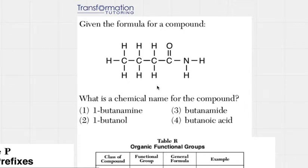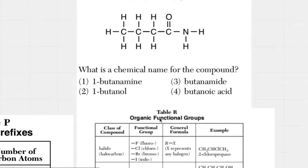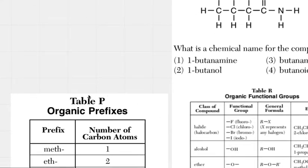And for Regents Chemistry, the reference table is your best friend. So the two parts of the reference table that are connected to organic chemistry are table R, which lists organic functional groups, and we also have table P, which gives us organic prefixes.